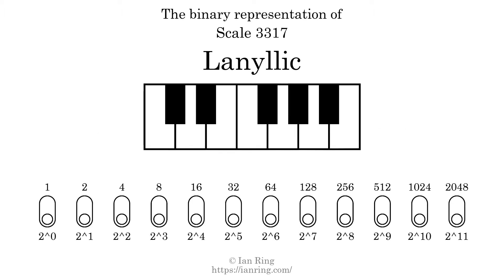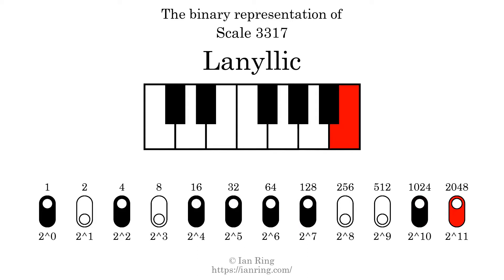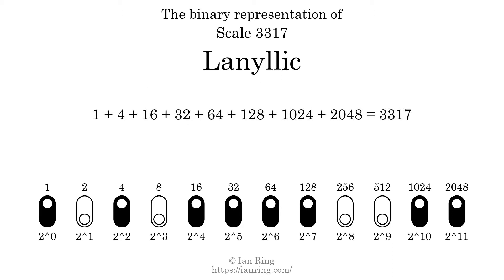The binary representation of this scale is determined by mapping tones of the scale to binary digits. Each binary digit represents a power of 2. To get the scale number, we add the powers of 2 together. The powers of 2 that are present in the scale, all added together, equals 3317. That is why the scale number, in decimal, is 3317. The scale number not only enumerates the scale with a unique index, but it also literally describes the tonal content of the scale.